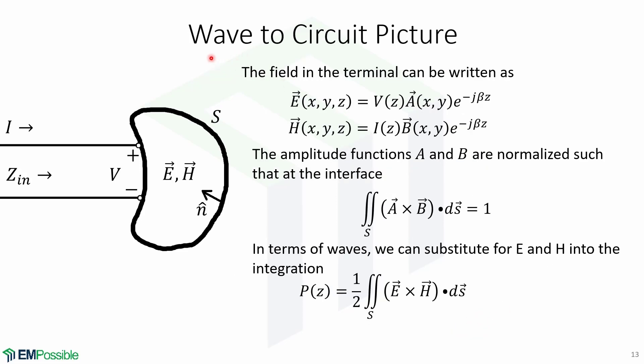Now we will go from electromagnetic waves to circuit parameters. The fields in the terminal can be written as this, where this is the expression for the electric field, and this is the expression for the magnetic field. Now we need to find a and b. The amplitude functions a and b are normalized such that at the interface, the integral of the surface, the cross product of a and b is equal to 1.